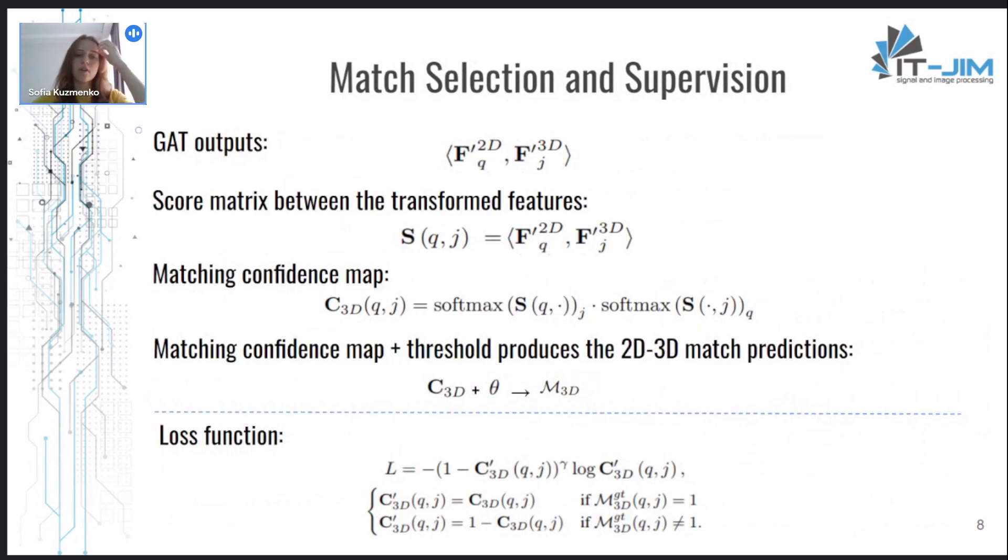Finally, the output from the cross attention layer is used in order to extract a matching confidence map. It is obtained by using this score matrix between the transformed features. And after selecting a confidence threshold, this map becomes a matrix which represents the 2D-3D match predictions.